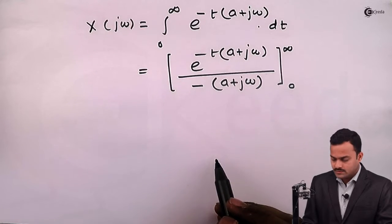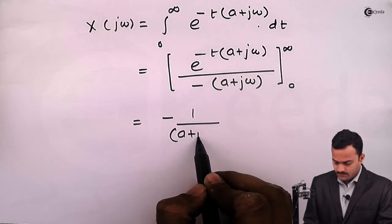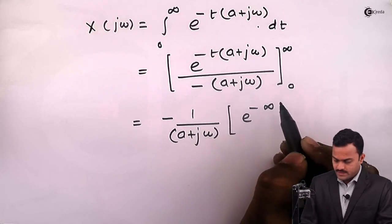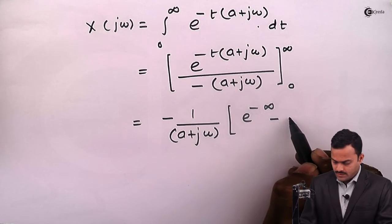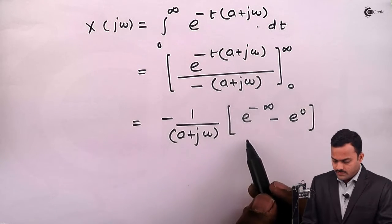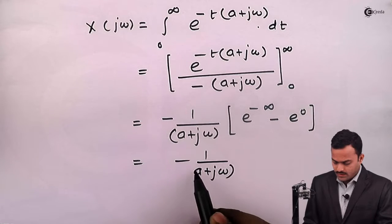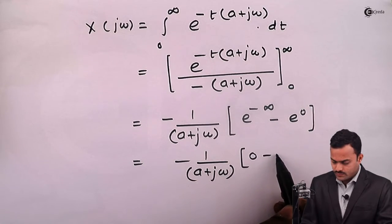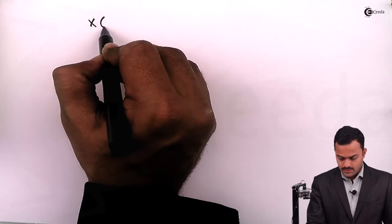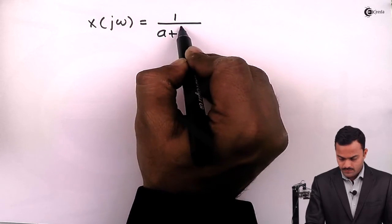Now let's apply the limits. Taking the constant outside and applying the limits, we get e^(-∞) minus e^0. Since e^(-∞) = 0 and e^0 = 1, we obtain X(jω) = 1/(a + jω).